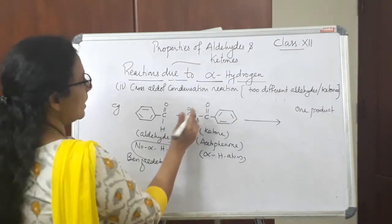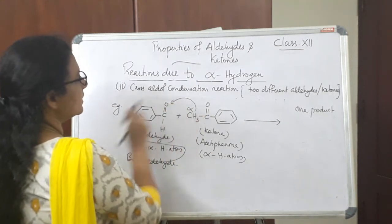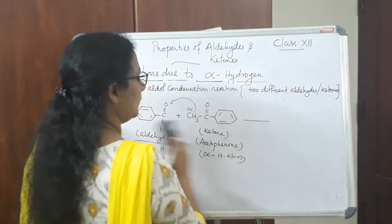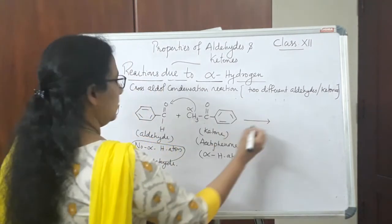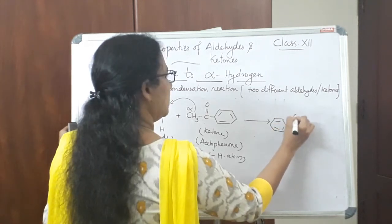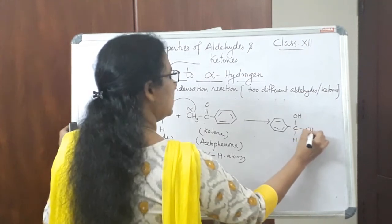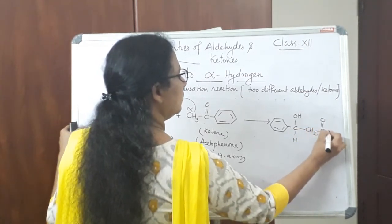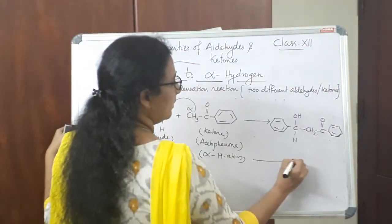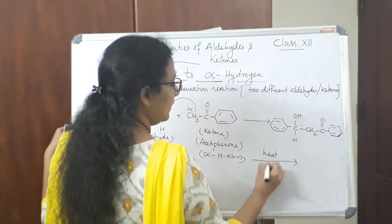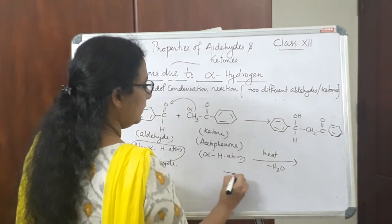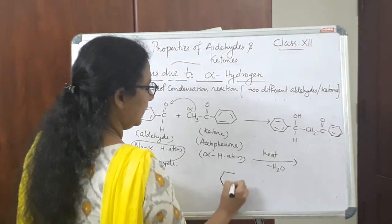The alpha hydrogen from acetophenone moves towards the oxygen of benzaldehyde, forming the cross aldol product: Ph–CH(OH)–CH₂–CO–Ph. On heating, elimination of one molecule of water takes place from this molecule, giving the final condensation product.